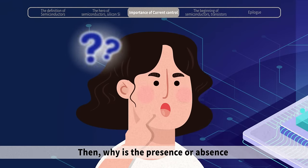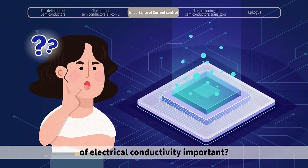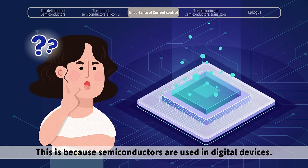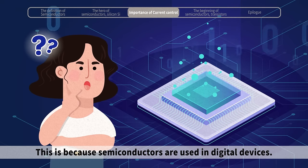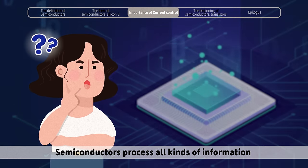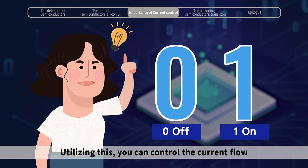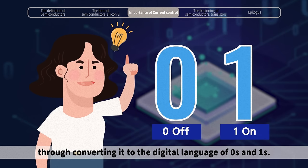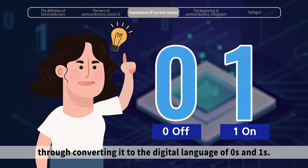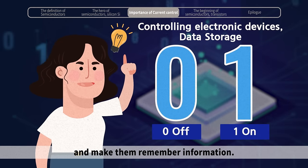Why is the presence or absence of electrical conductivity important? This is because semiconductors are used in digital devices. Semiconductors process all kinds of information using binary numbers — the simple 0 and 1. Utilizing this, you can control the current flow through converting it to a digital language of 0s and 1s, and we can control electronic devices and make them remember information.